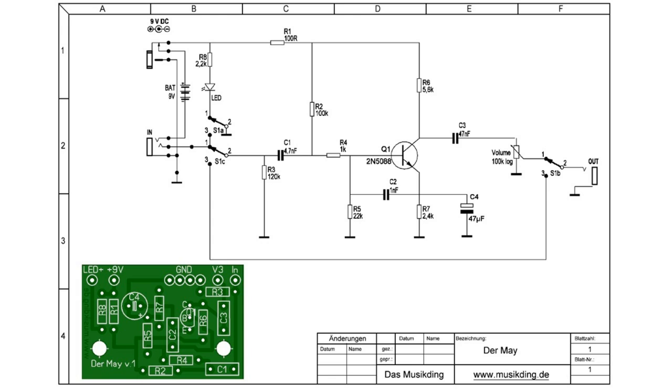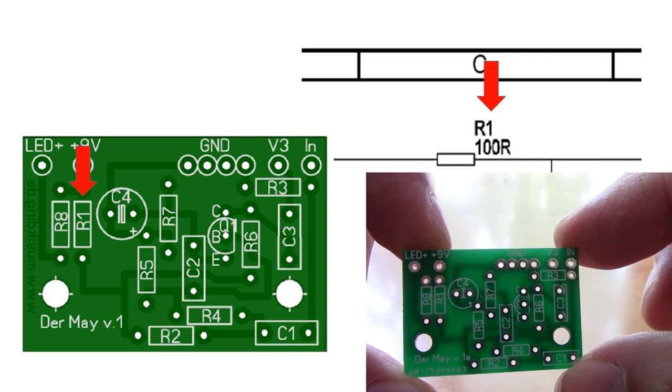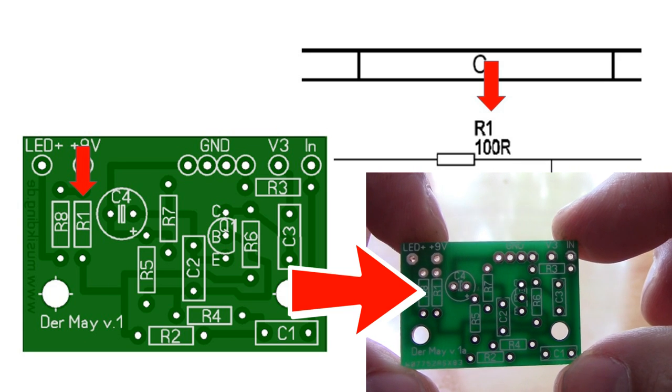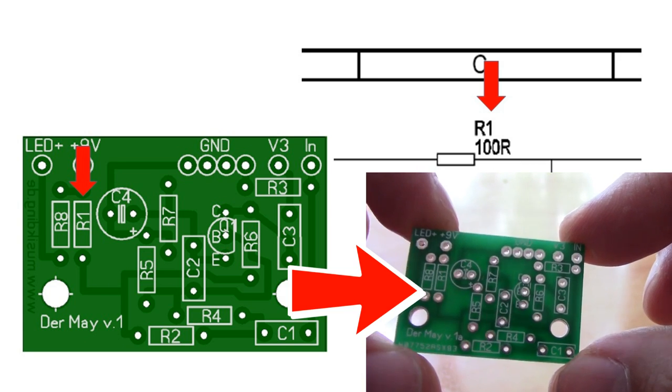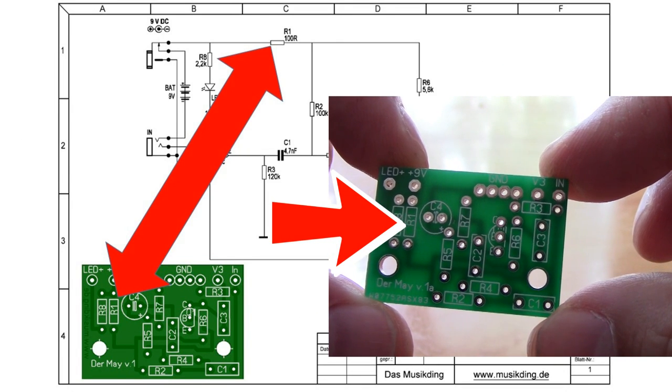Back to the schematic. Let us look at resistor number one which is designated as R1. In the schematic it is located here and has a value of 100 R or 100 ohms. The board itself also has a marker for resistor one or R1 and the location is here. Now that we have cross-referenced the schematic to the board we now know where R1 is to be installed.